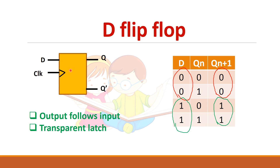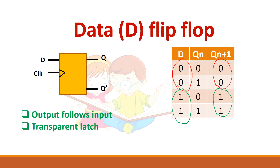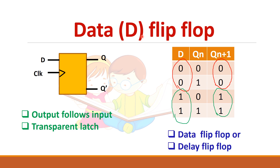We can say that the output follows the input: D is 0, output is 0; D is 1, output is 1. So D flip-flop is also called a transparent latch — that is, whatever is at the input is reflected in the output. It is also called delay flip-flop because whatever data you give, after a clock cycle it will reach the output.